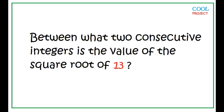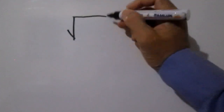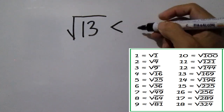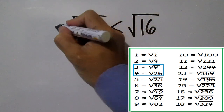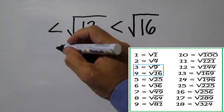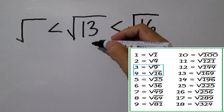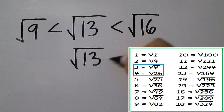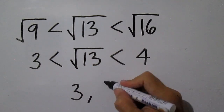Between what two consecutive integers is the value of the square root of 13? Square root of 13 is less than square root of 16 and greater than square root of 9. Square root of 13 is less than 4 and greater than 3. Square root of 13 is between integers 3 and 4.